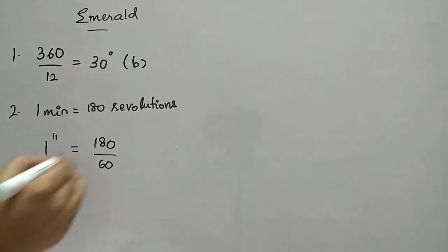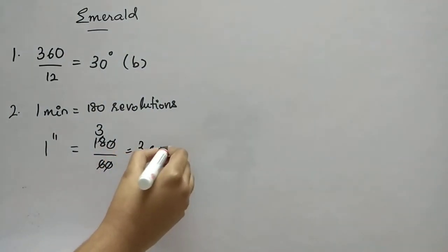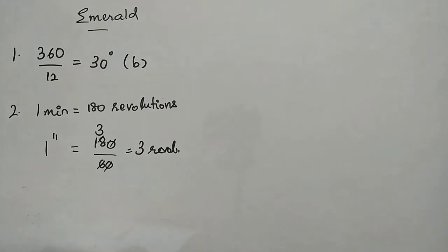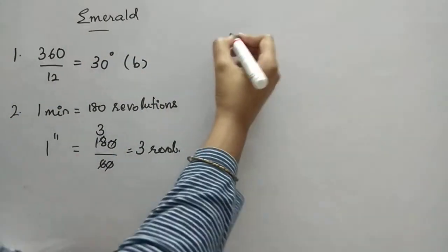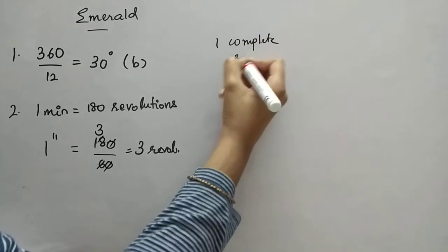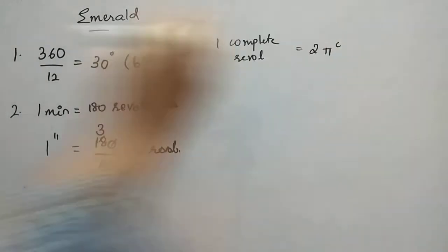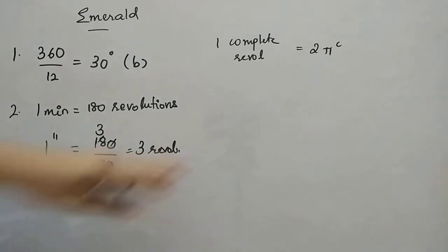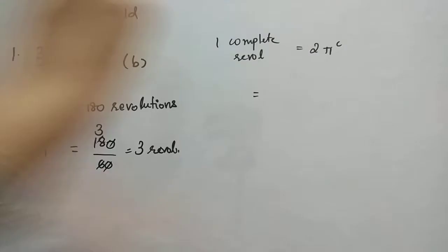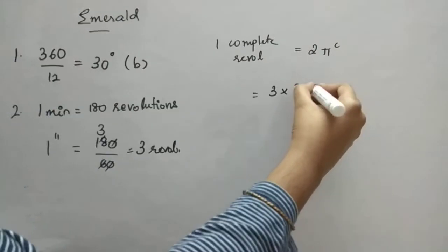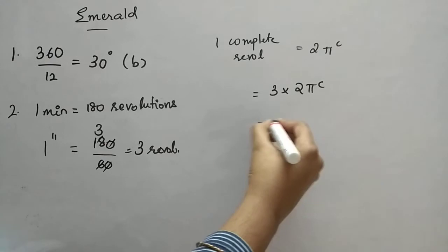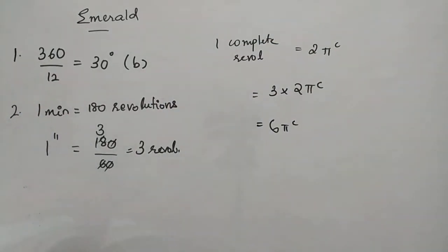So it is 180 by 60 because 1 minute is 60 seconds. When you cancel, 3 revolutions. Now, 1 complete revolution is 2 pi radians. So 3 revolutions, 3 and 2 pi is 6 pi. So answer is option A.